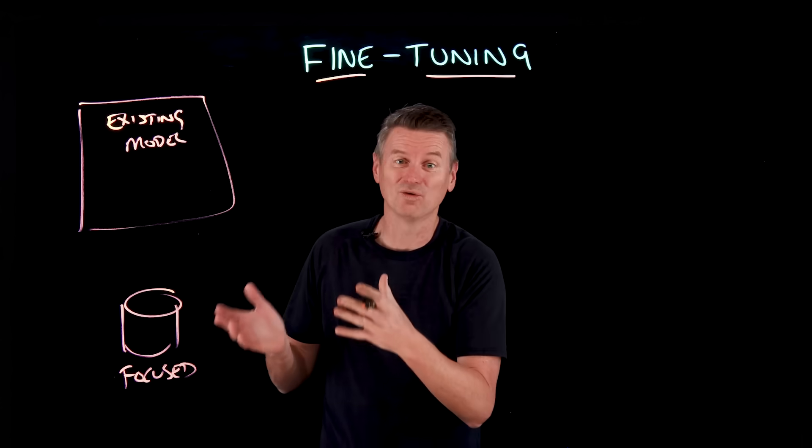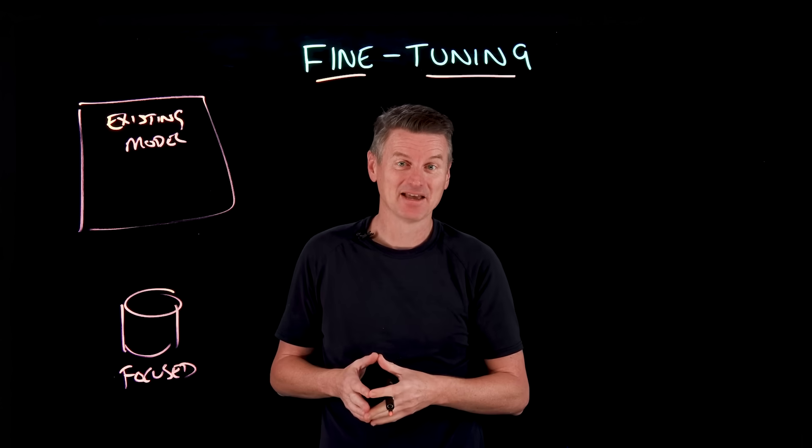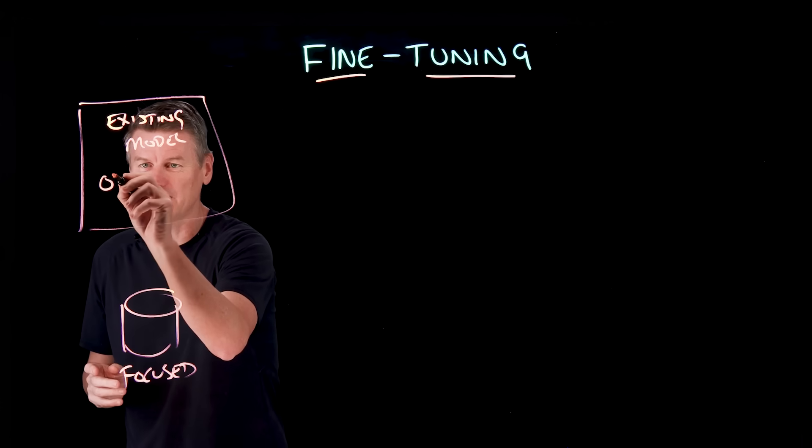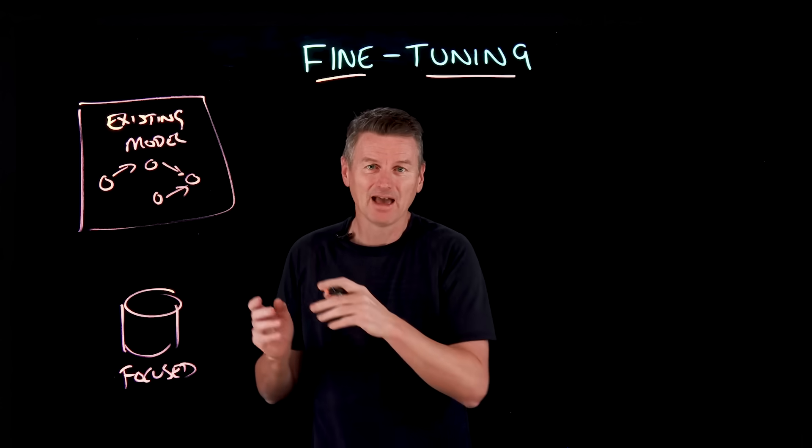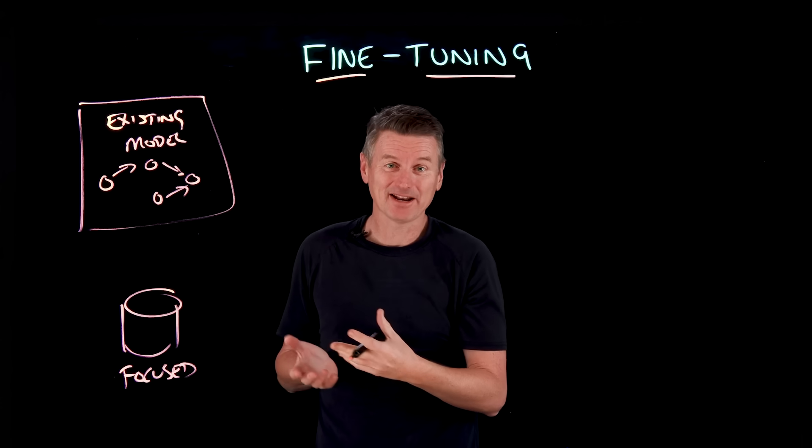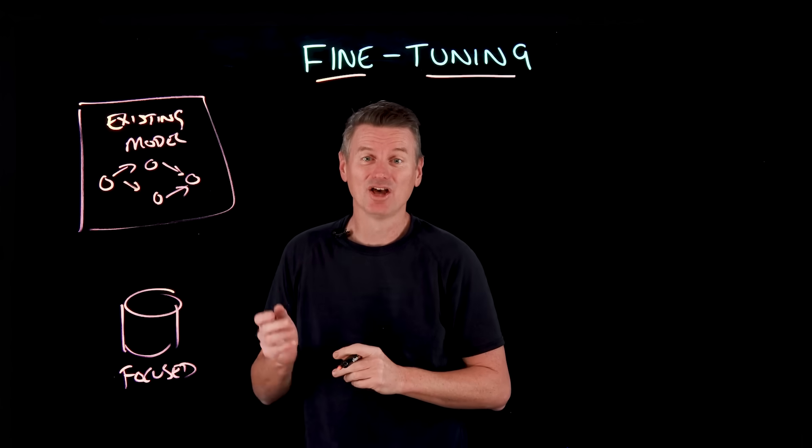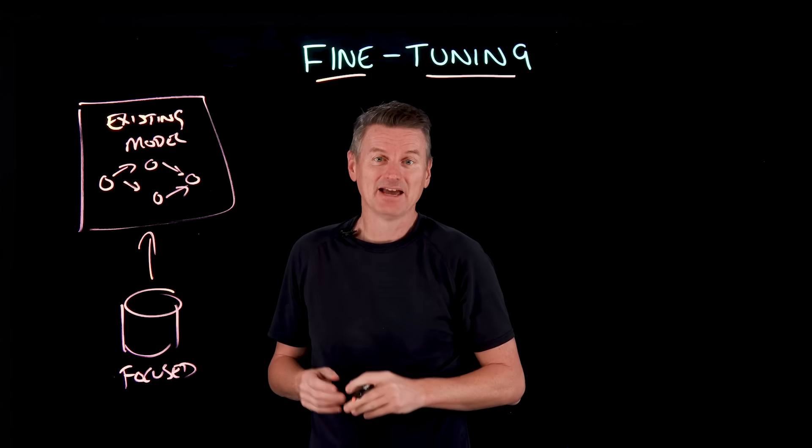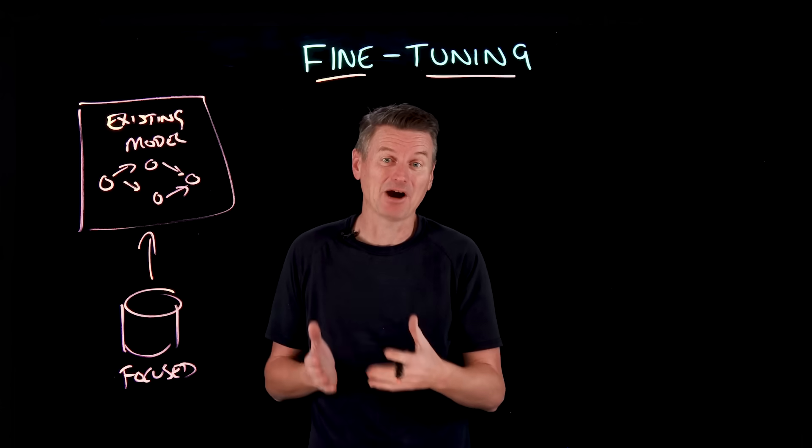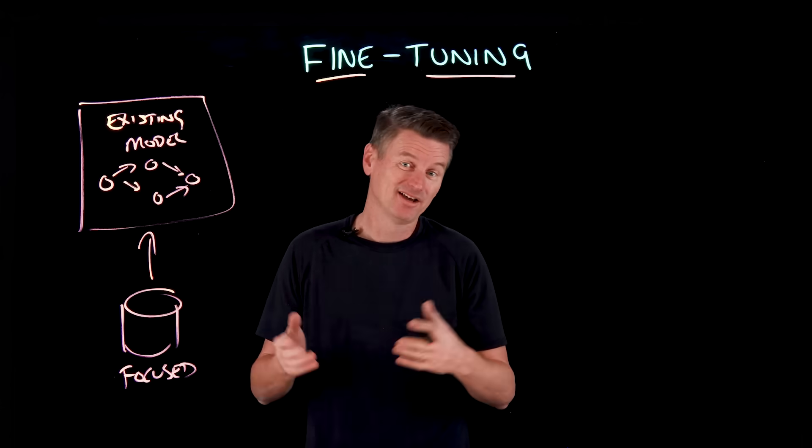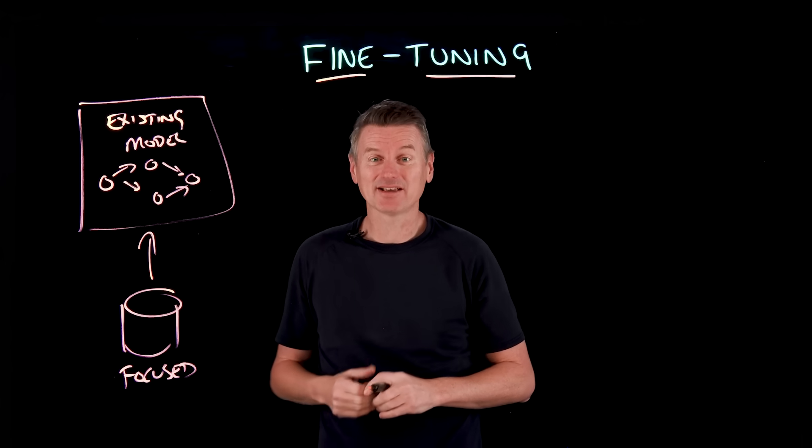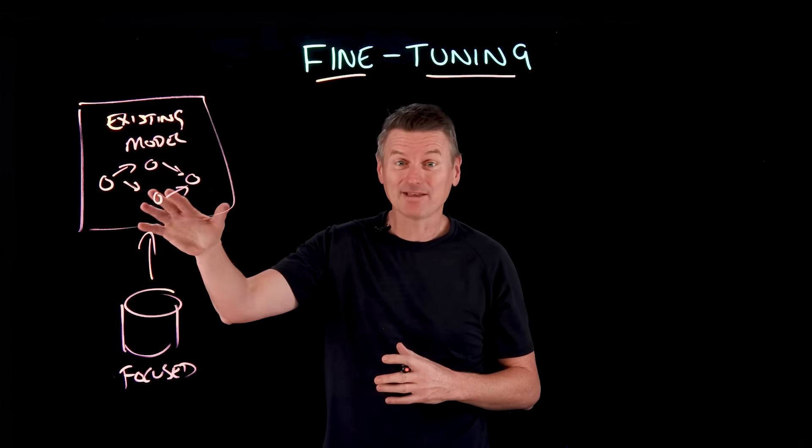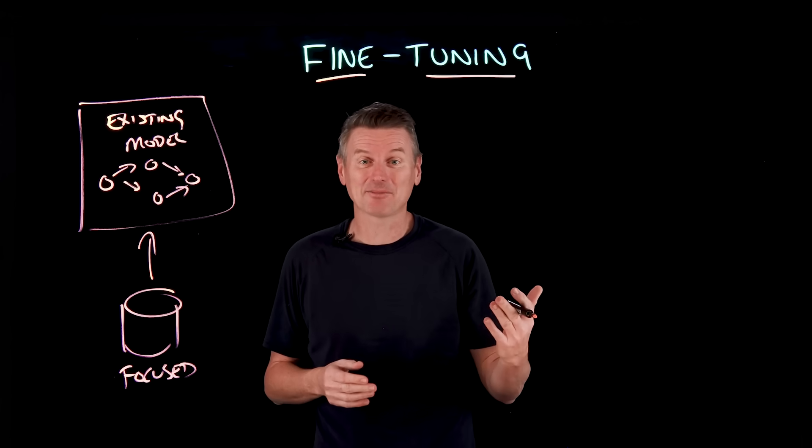During fine tuning, we're updating the model's internal parameters through additional training. So the model starts out with some weights here, like this. And those weights were optimized during its initial pre-training. And as we fine tune, we're making small adjustments here to the model's weights using this specialized dataset. So this is being incorporated. This process typically uses supervised learning, where we provide input output pairs that demonstrate the kind of responses we want. So for example, if we're fine tuning for technical support, we might provide thousands of examples of customer queries, and those would be paired with correct technical responses. The model adjusts its weights through back propagation to minimize the difference between its predicted outputs and the targeted responses.